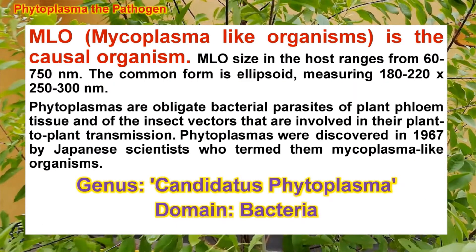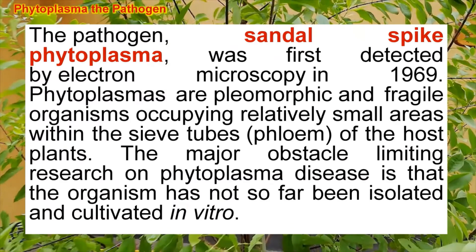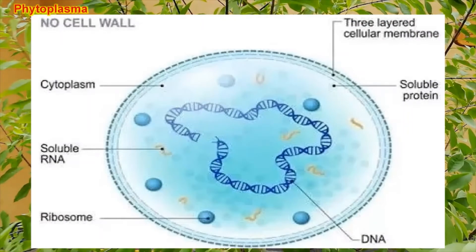Mycoplasma-like organisms are very small organisms. They belong to the genus Candidatus phytoplasma and to the domain Bacteria, and they are causing serious problems in many plants and also animals. They are very difficult to study because they are ultra-microscopic structures. They were actually discovered in 1967 by a Japanese scientist, who called them mycoplasma-like organisms or MLOs. Sandal spike disease is very difficult to study because the pathogen is very small, pleomorphic, and very fragile, and it can be studied only by using an electron microscope.